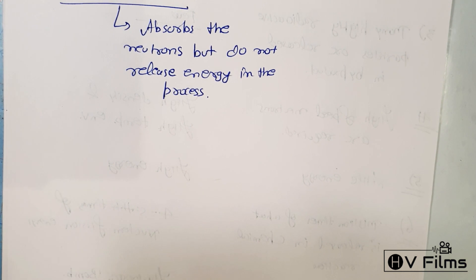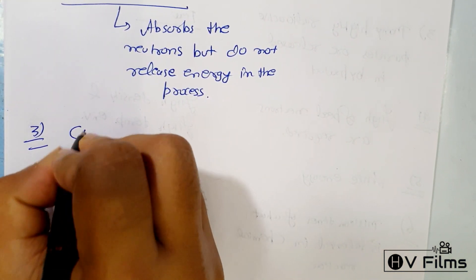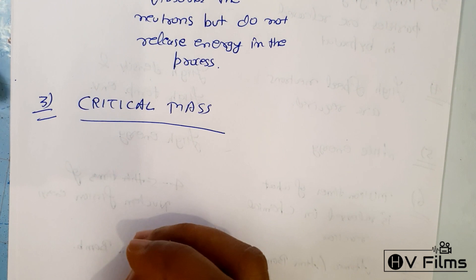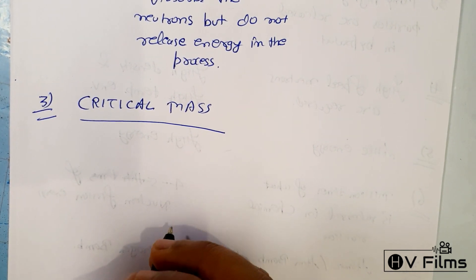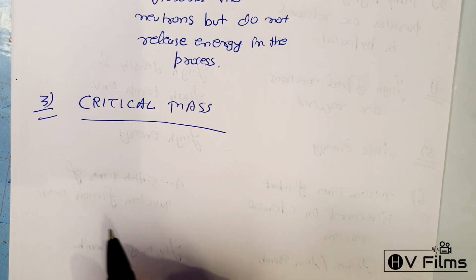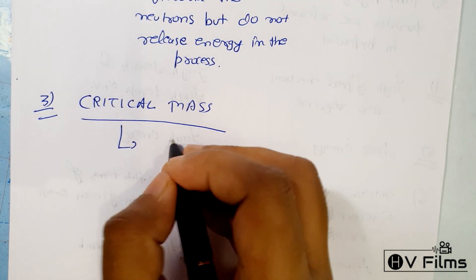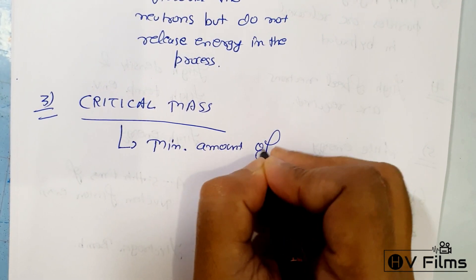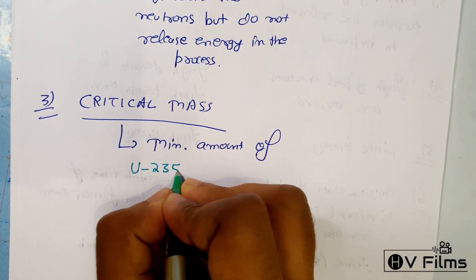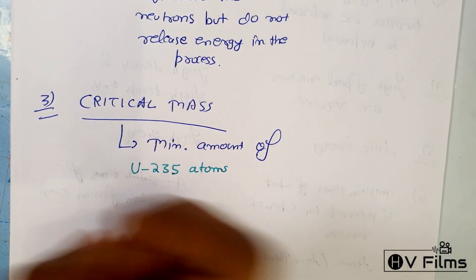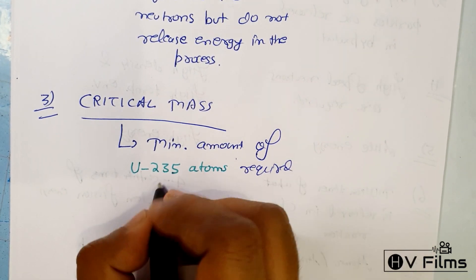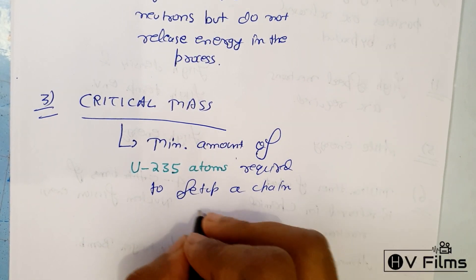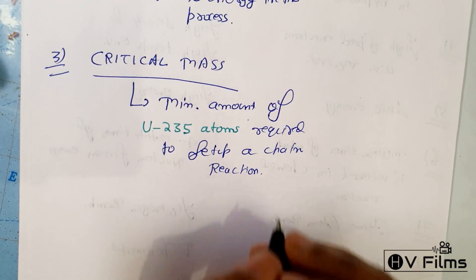The next term we need to know is critical mass. Critical mass is the minimum amount of uranium-235 atoms required to set up a chain reaction.